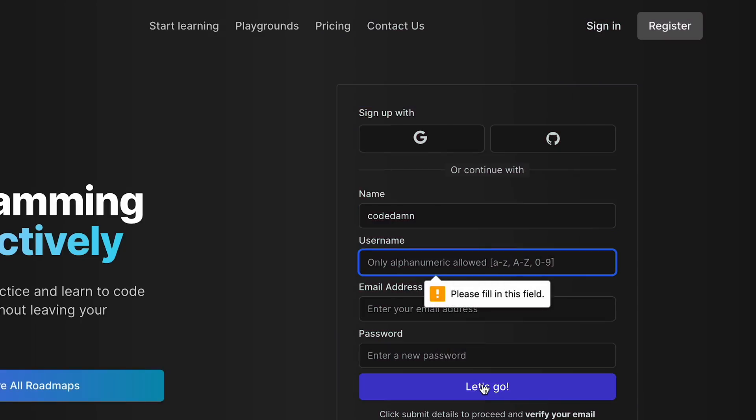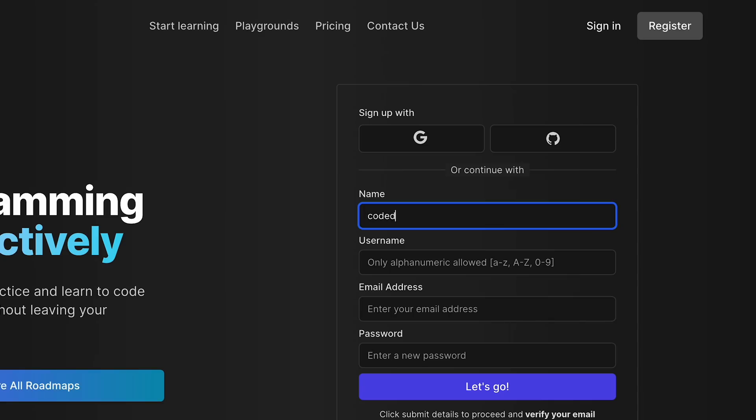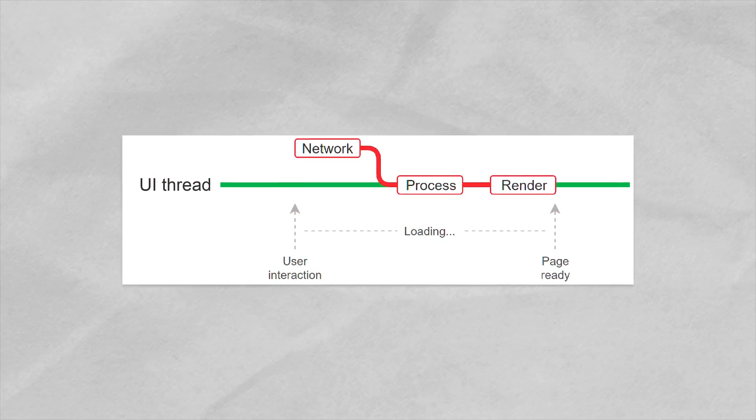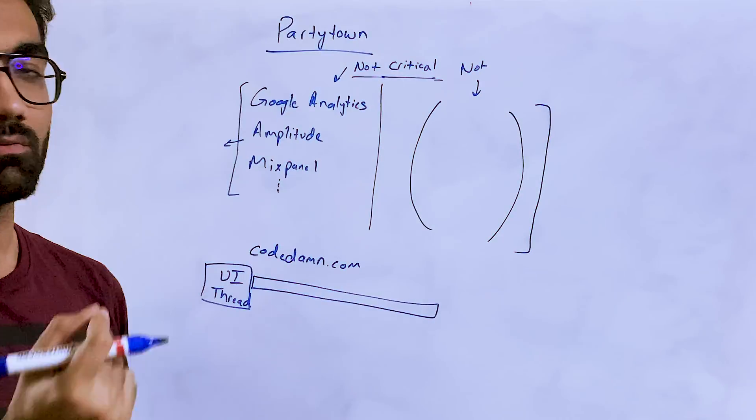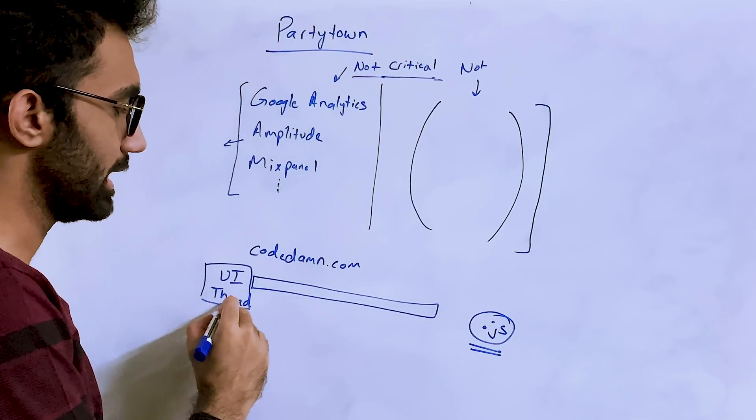So the website which you see whenever you click on a button, the navigation which happens when you're writing in a text area, all those events are executing on this main UI thread and the JavaScript .js file which you write also runs on the same thread.